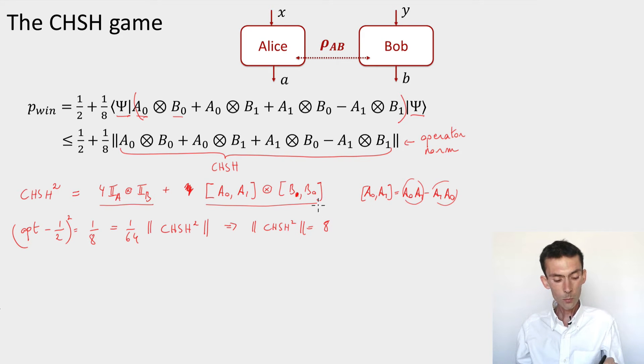What this is saying is that achieving the optimum success probability is very constraining for the operators. All these inequalities must be satisfied to equality. In particular, if you want the norm of the commutator to be equal to 2, the only way that this can be achieved is that A0*A1 should be equal to minus A1*A0. And also B0*B1 should be equal to minus B1*B0. That's the conclusion for now. Any strategy that achieves the optimum winning probability must be such that Alice's observables and Bob's observables anti-commute.